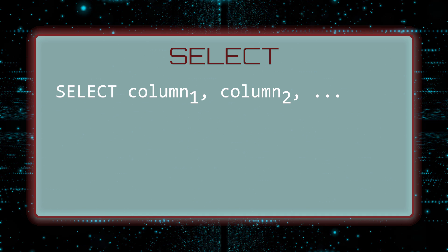A SELECT query is used to retrieve data from one or more tables. The first part of a SELECT query is to list the columns you want data for. If you do not want to specify the columns, you can use an asterisk to retrieve all columns.